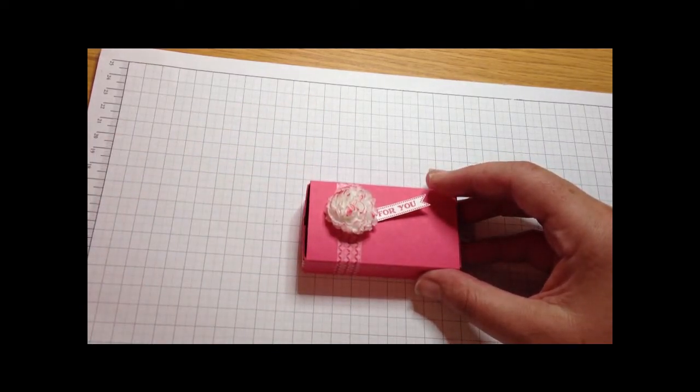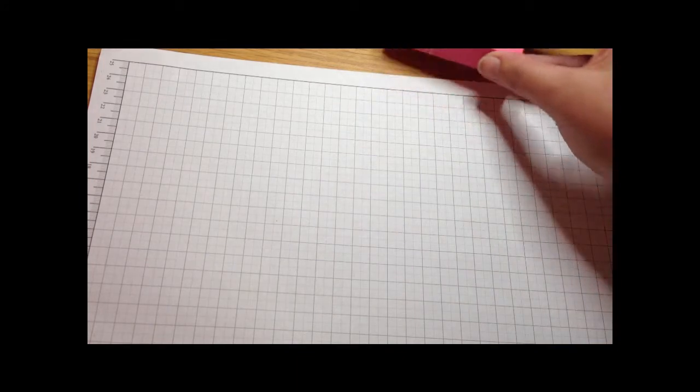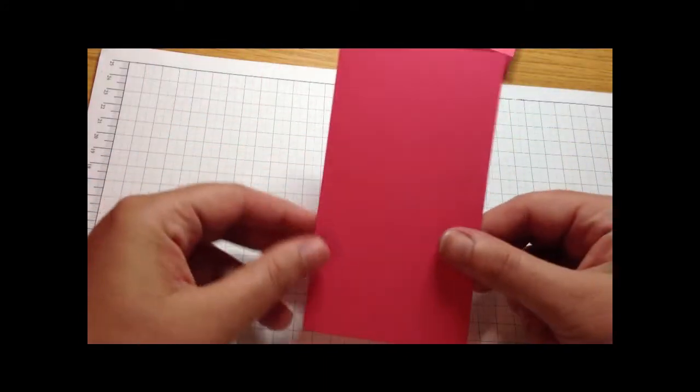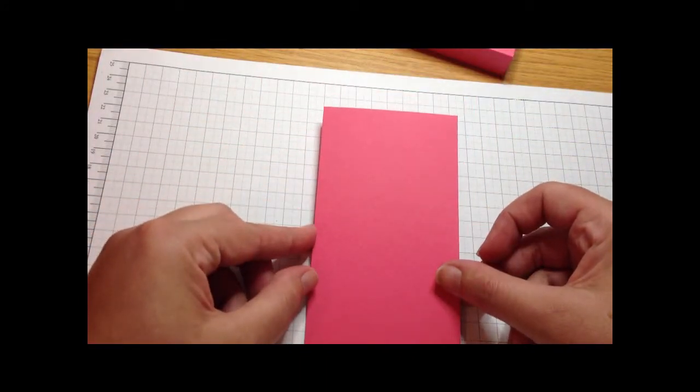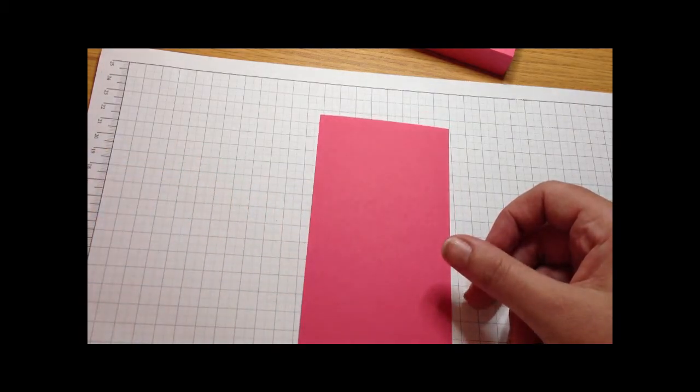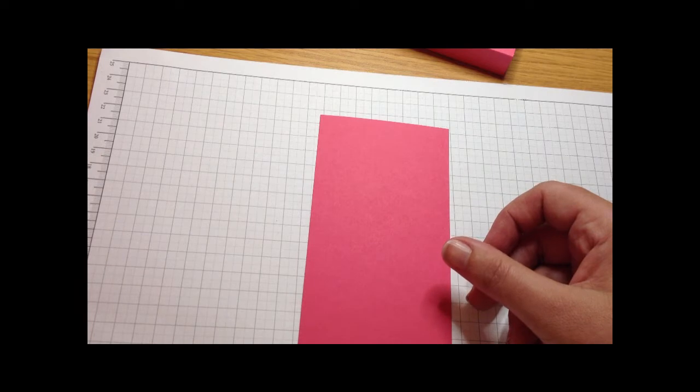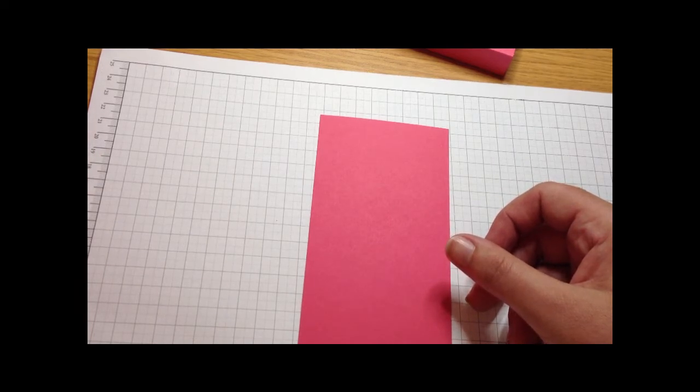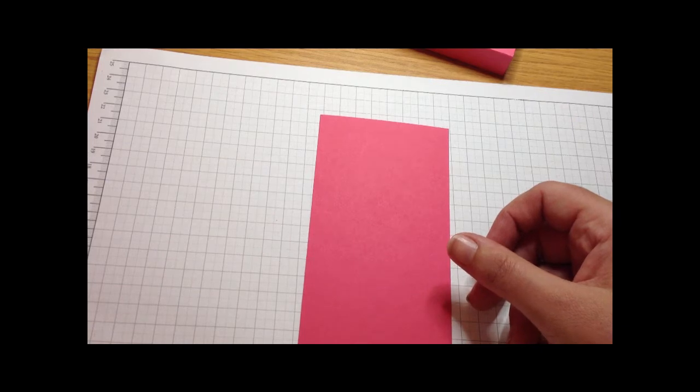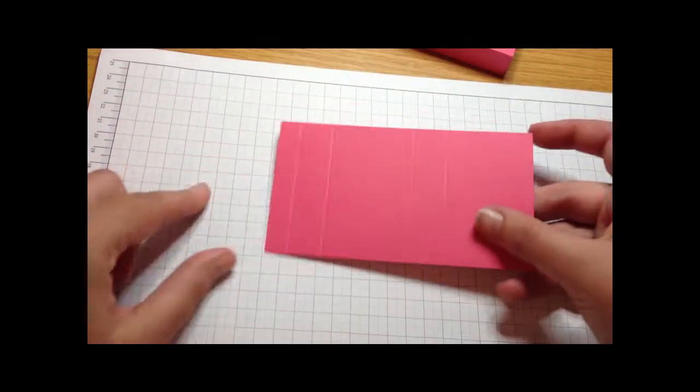You are going to start with a piece of card that measures 5¾ x 3¼ and you are going to score it at half an inch, one and a quarter inches, three and an eighths and three and seven eighths. So it will look like that.